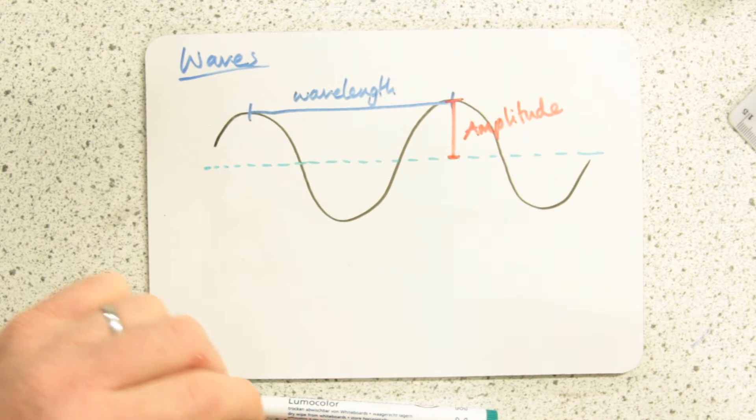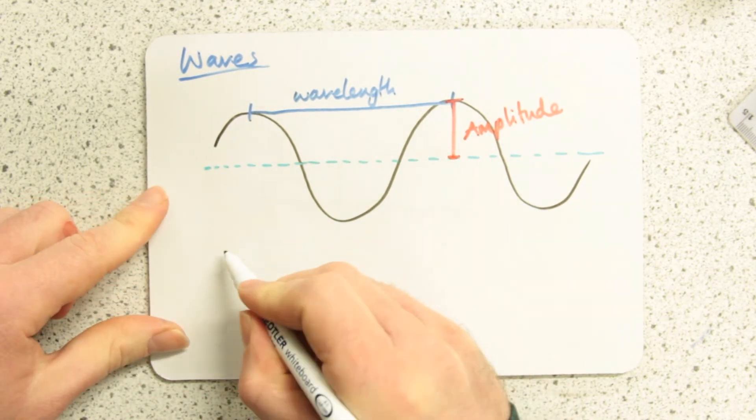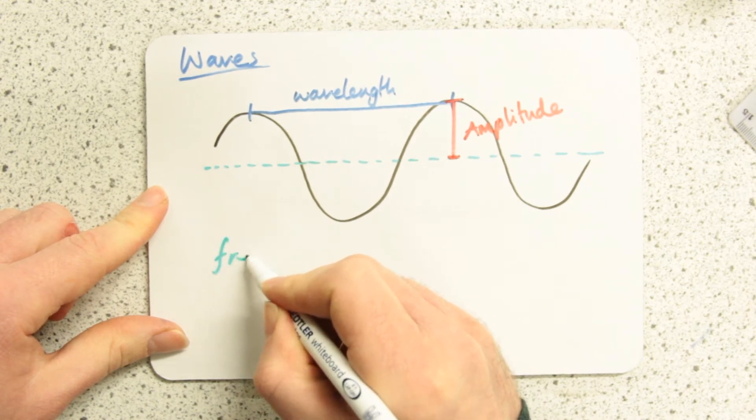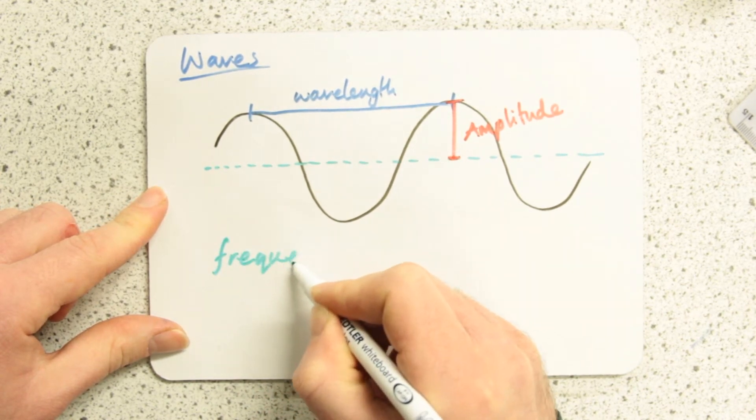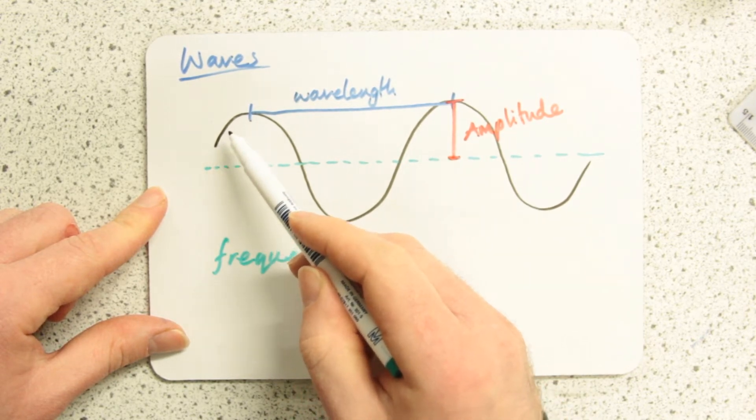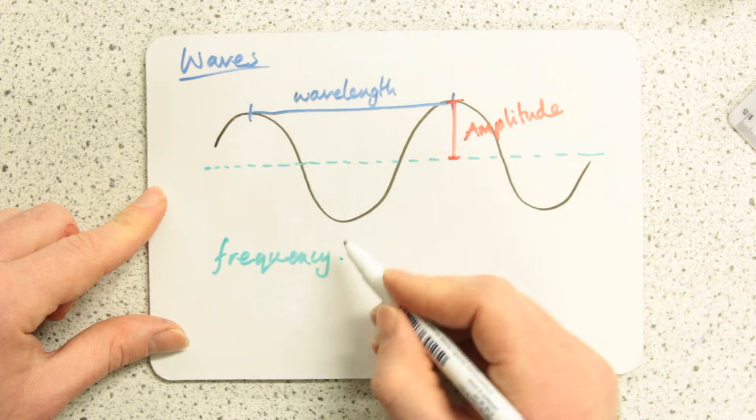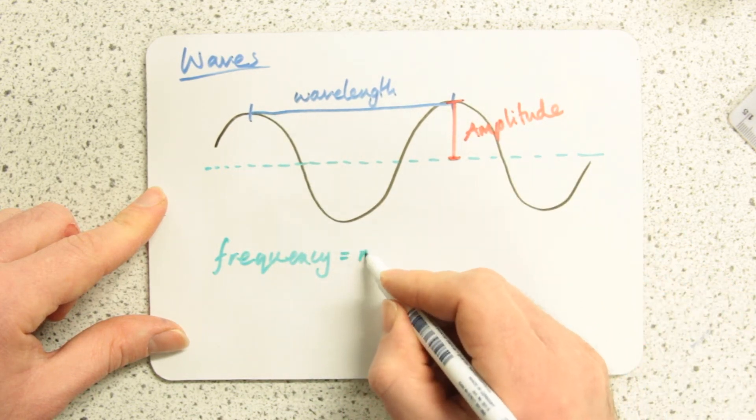And then lastly, the third important wave quantity that you need to know about in this basic introduction is what a frequency is. Now, the frequency is not the number of waves. I haven't got a frequency of, let's say, two here because I've got two full cycles. Frequency is number of waves per second.